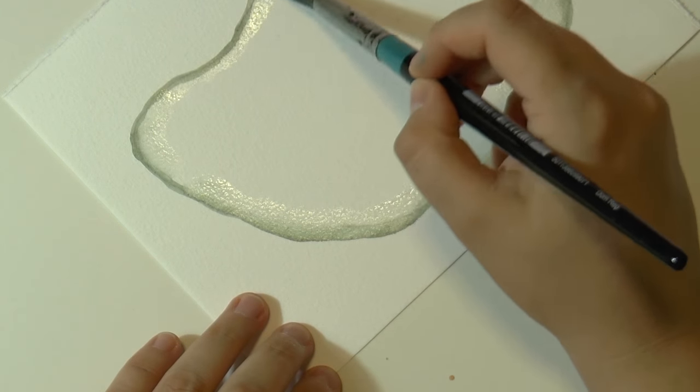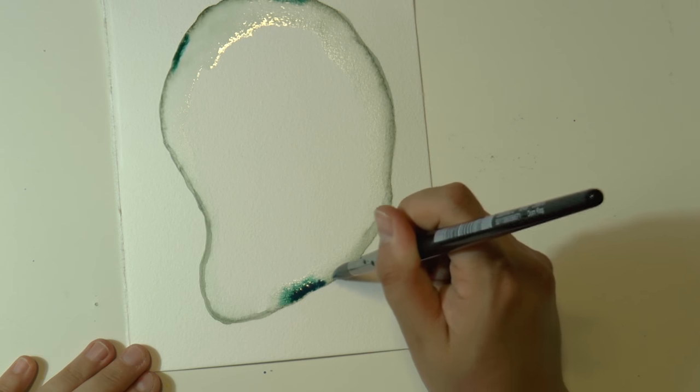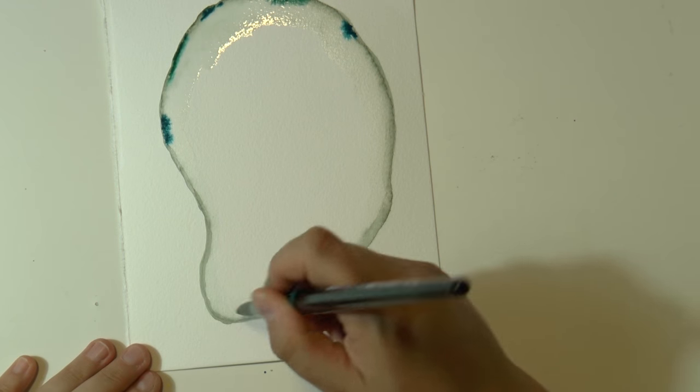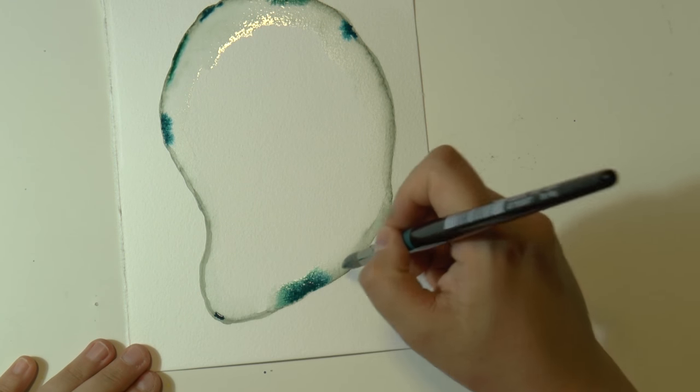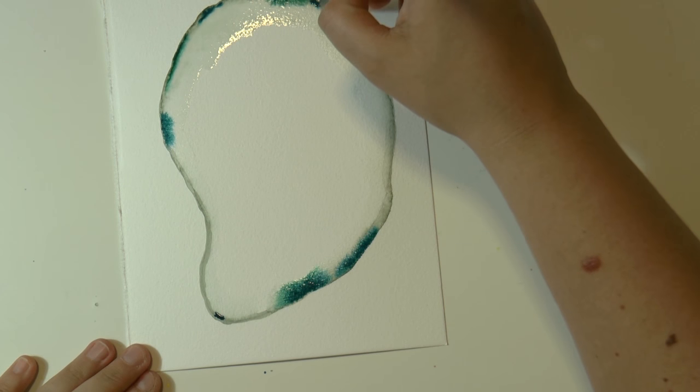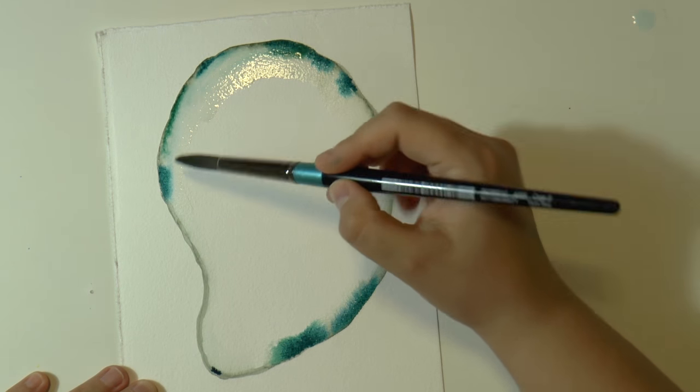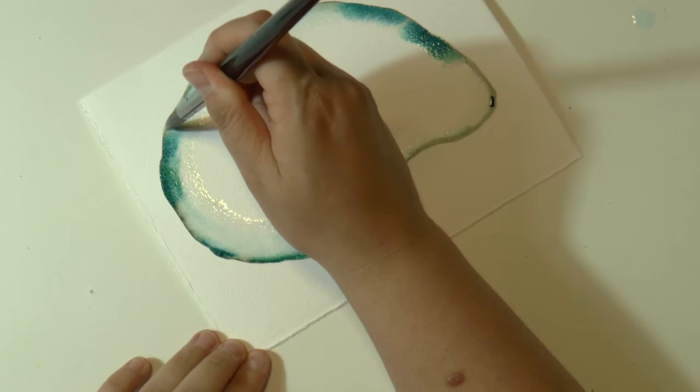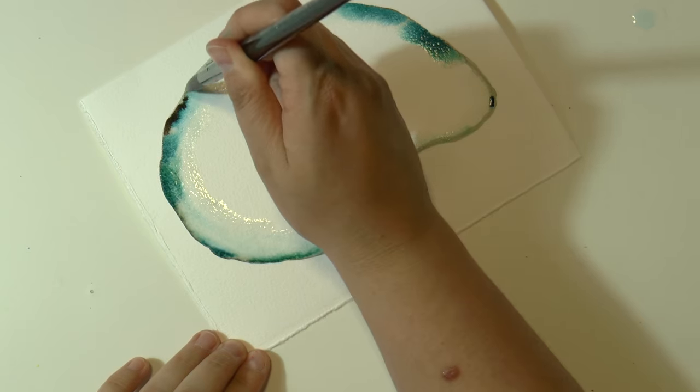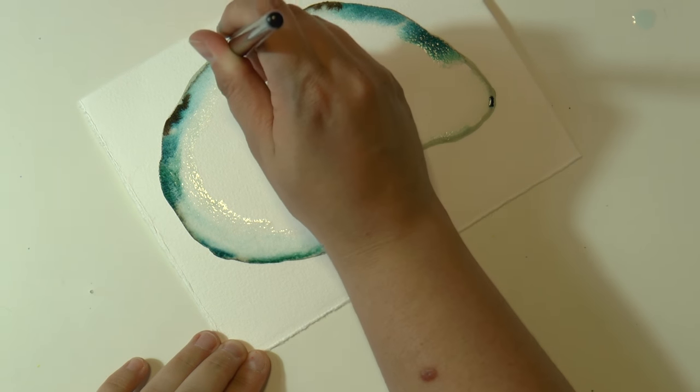And with my paper really wet I go over with my first color which in this case is like a blue green color like an aqua color. But you know I don't like to use just one color. I always use two or three different shades so for this geode I will use some greens and some blues and some blue green colors and teals.